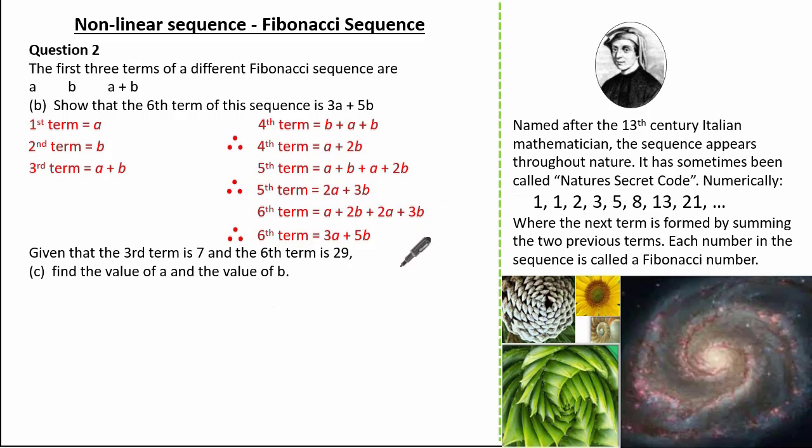Now the next question says given that the third term is 7 and the sixth term is 29, find the value of a and the value of b. So substituting what we know to be the third term which is 7, I have now formed an equation: a plus b equals 7. We also know the sixth term is 3a plus 5b, and the question tells me it's 29. So making 3a plus 5b equal to 29 forms another equation.